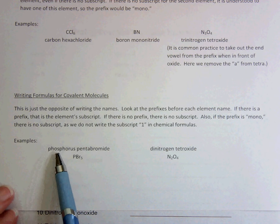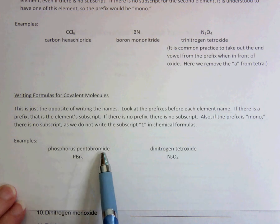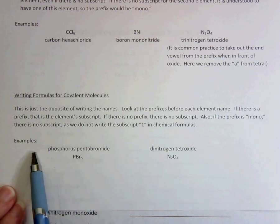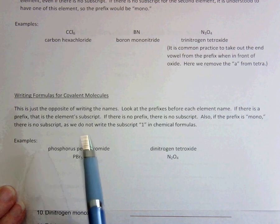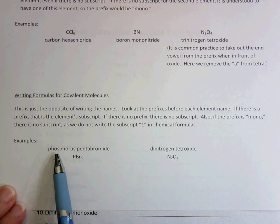So here's the example, phosphorus pentabromide. Phosphorus has no prefix here. There's no di, tri, or anything in front of it. So I'm just going to write the symbol for phosphorus, which is P.